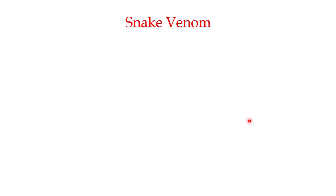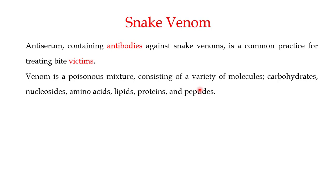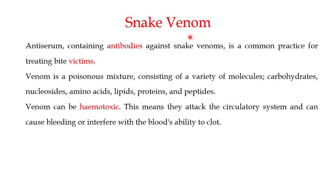Now in this video I want to give you two more examples where we can use anti-serum. The first one is the snake bite. The anti-serum used for the treatment of snake bite victims actually contains antibodies against the snake venom. This venom is a poisonous mixture which consists of a variety of molecules like carbohydrates, nucleosides, amino acids, lipids, proteins, and peptides. The snake venom creates different kinds of pathological conditions in the victim, and the anti-serum contains antibodies against that venom.